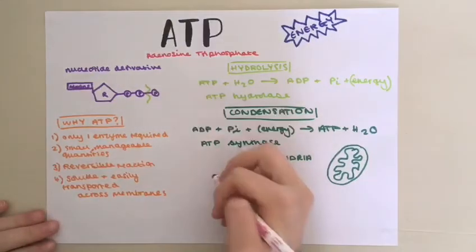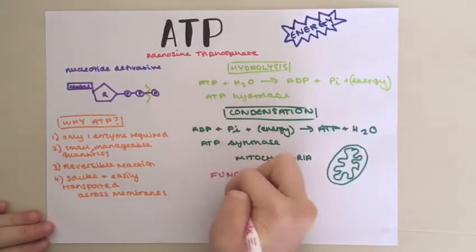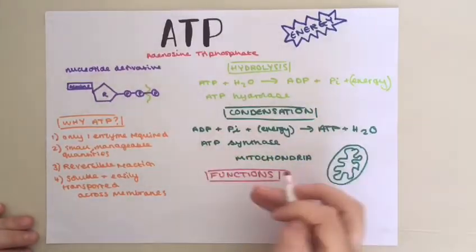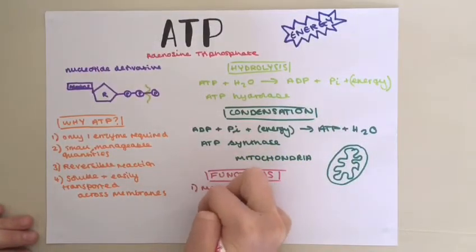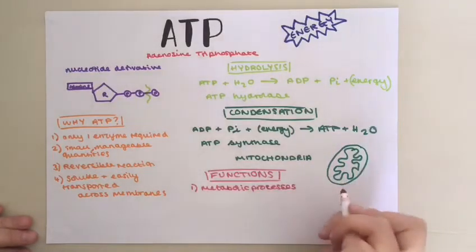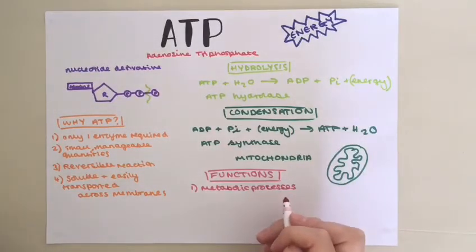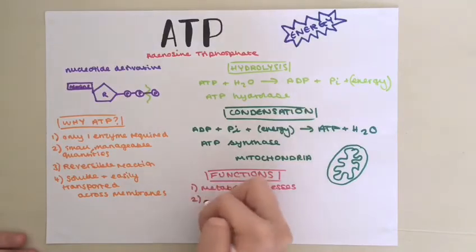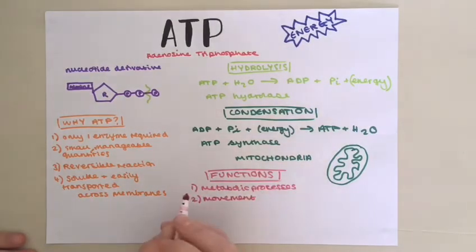There are five main functions of ATP. Firstly, it's used for metabolic processes. Energy is required to build macromolecules. Secondly, it's used for movement, for example, muscle contraction.